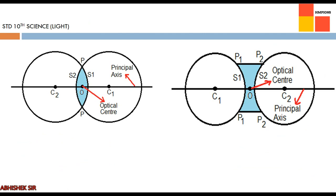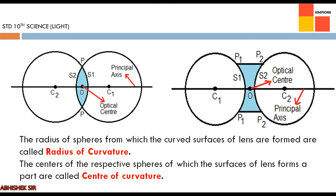These lenses have two curved surfaces, and we imagine that both surfaces form a part of some imaginary sphere. Based on this, we define two terms: radius of curvature — the radius of the sphere from which the curved surfaces of the lens are formed — and center of curvature — the center of the sphere of which the surface of the lens forms a part.